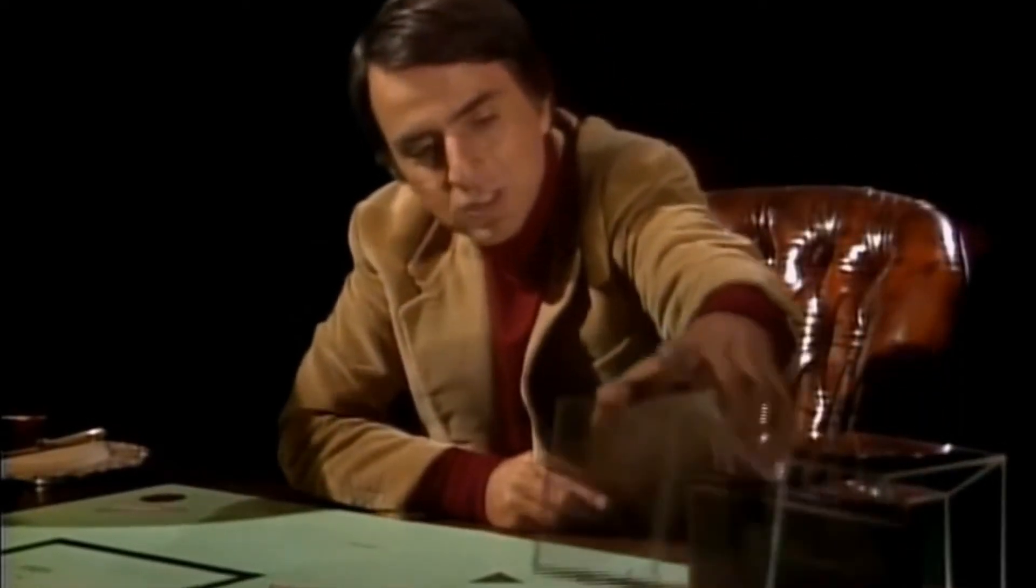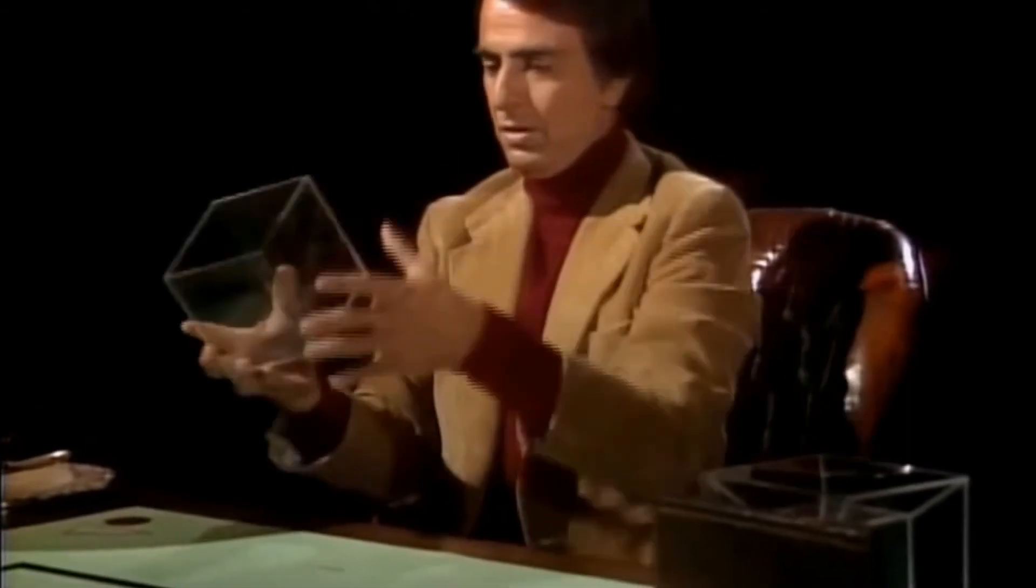Now, to approach that, let's consider a cube. We can imagine a cube in the following way. You take a line segment and move it at right angles to itself in equal length. That makes a square. Move that square in equal length at right angles to itself, and you have a cube.